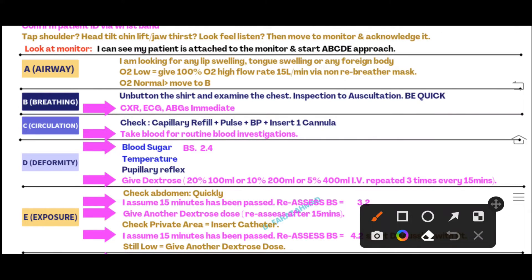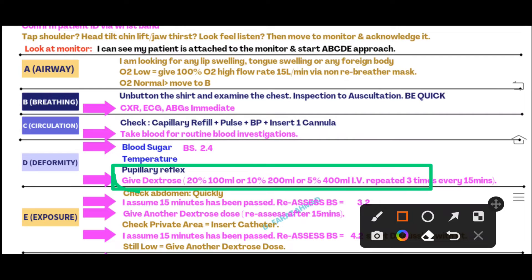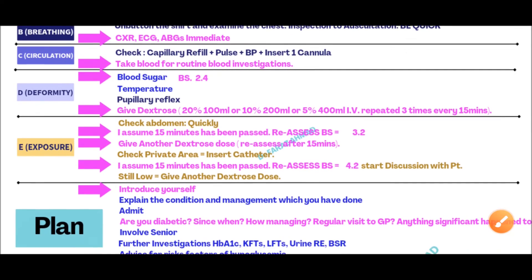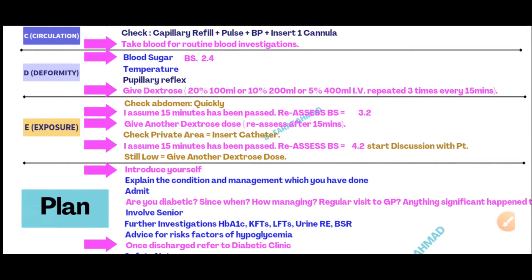The examiner has given a blood sugar reading of 2.4, so say: 'I am going to give dextrose to my patient.' Verbalize based on the available dextrose: 'I am going to give dextrose 20% 100ml, or 10% 200ml, or 5% 400ml, and I will repeat this every 15 minutes.' If the available dextrose in the exam is 20%, say: 'I am going to give 20% dextrose 100ml.'